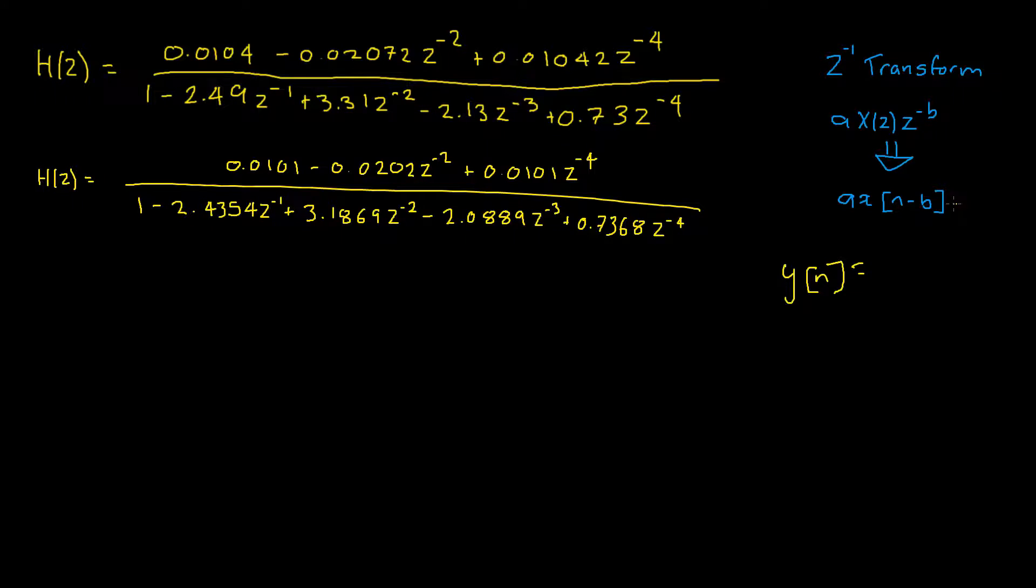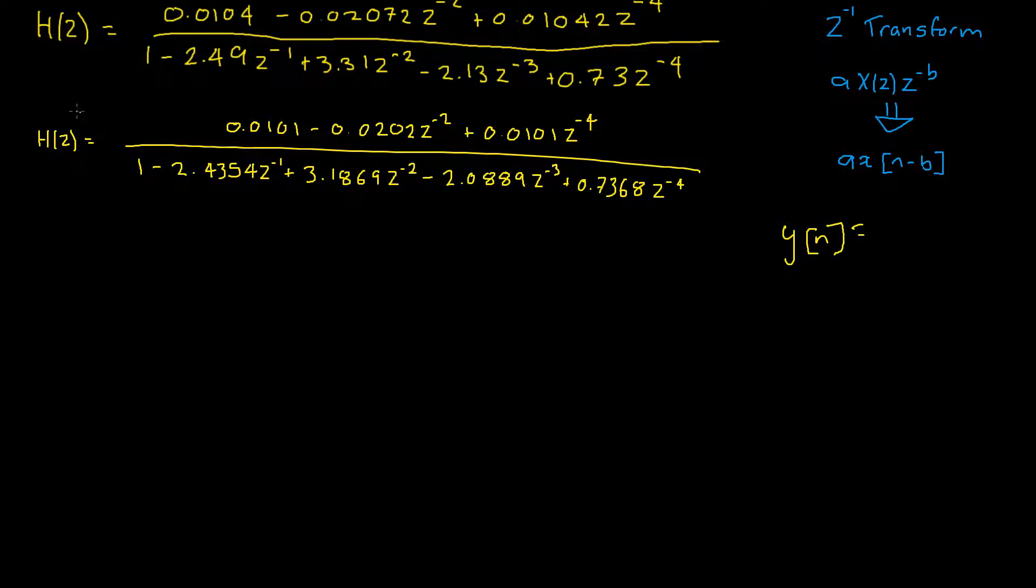So, how do we do that? Well, we'll do a little bit of algebra, we'll use our inverse Z transform so let's get started. Firstly, we know that H of Z is equal to Y of Z divided by X of Z.